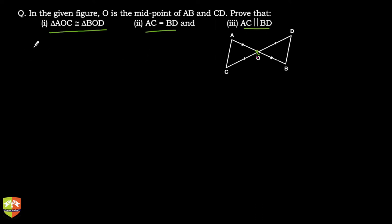Let's start with writing what is given. What's given? AO is equal to OB, that's point number one, and then secondly CO is equal to OD.